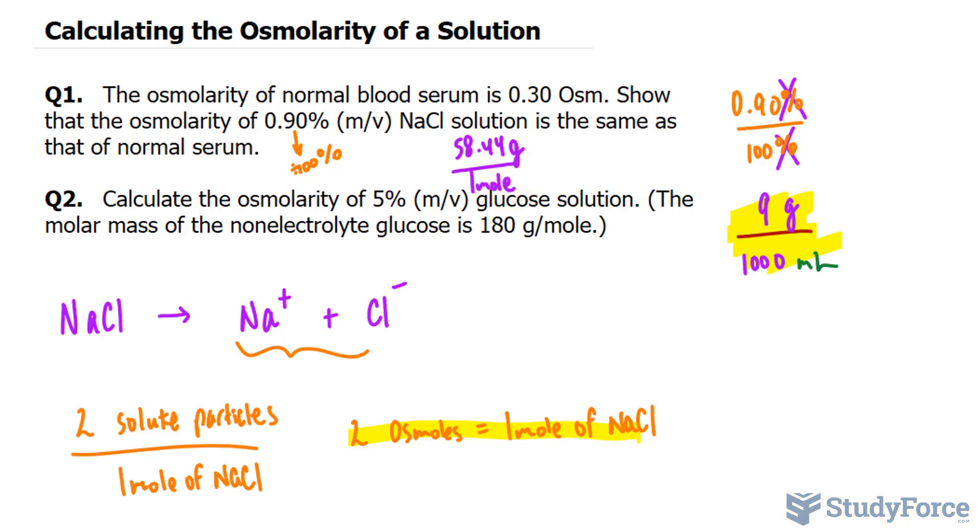Now watch this. If I take this ratio and flip it where I have 1 mole at the top and 58.44 grams at the bottom, and I multiply it to the concentration converted into a fraction, this number, 9 grams per every 1,000 milliliters, this gram unit and this gram unit will cancel out.